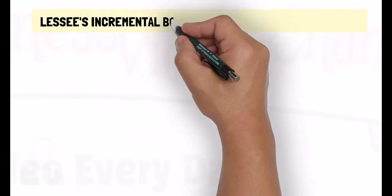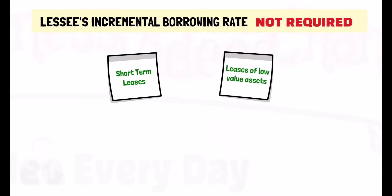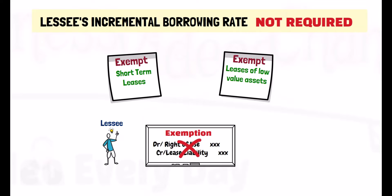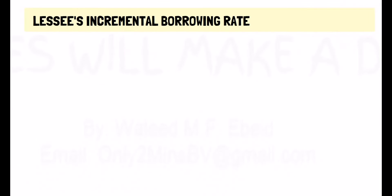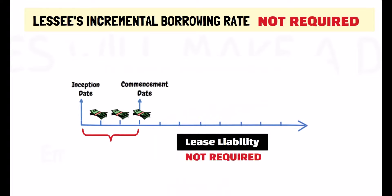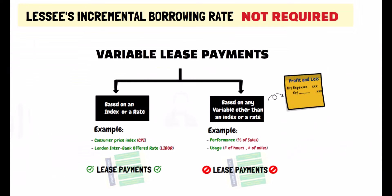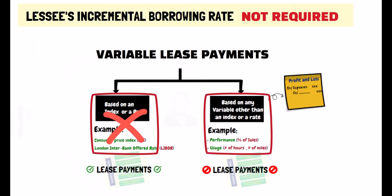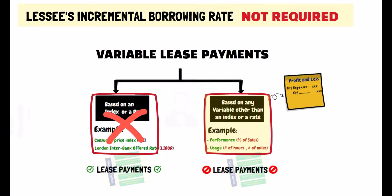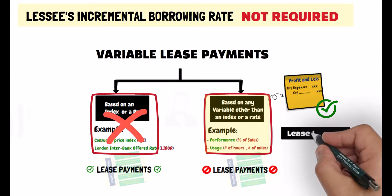There are some cases where the calculation of the lessee's incremental borrowing rate is not required. First, when the lease is either a short-term lease or a lease of a low-value asset, and the lessee elects not to recognize a right-of-use asset and a lease liability for them. Second, when all lease payments are made on or prior to the commencement date of the lease — in this case, no lease liability calculation is required because there are no lease payments paid after the commencement date. Third, when all the lease payments are variable payments based on sales or usage of the underlying asset and not dependent on an index or a rate. Such variable payments are recognized directly in the statement of profit and loss, so no lease liability calculation is required.